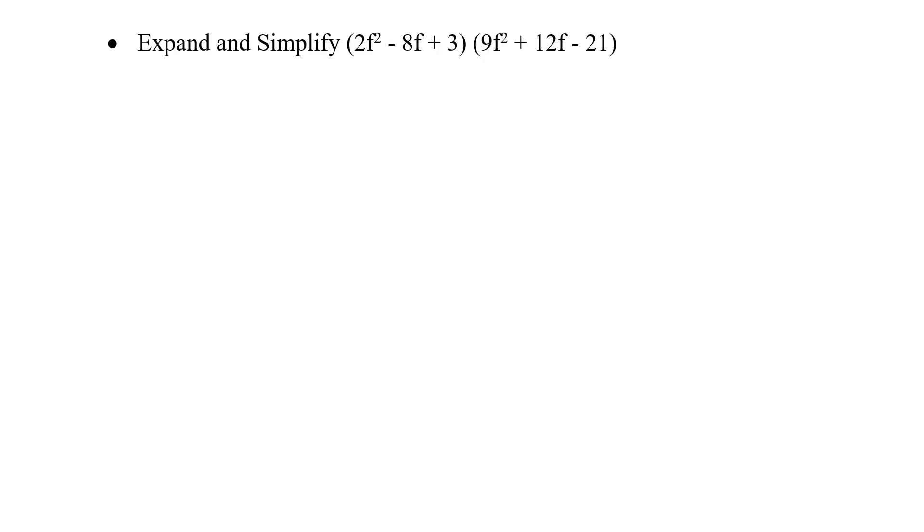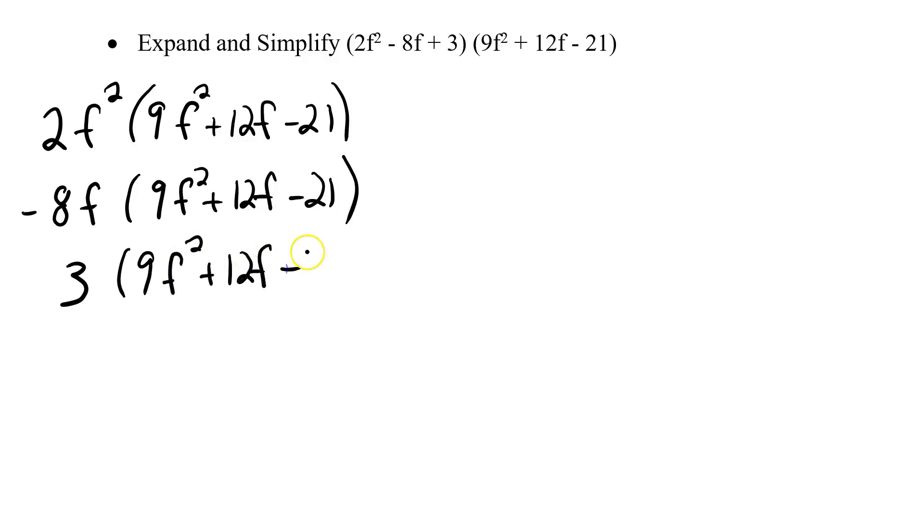Expand 2f squared minus 8f plus 3 times 9f squared plus 12f minus 21. Okay, a much more difficult question, but the same process applies. Take the first polynomial and write each term out. So I've got 2f squared minus 8f and 3 times that by the entire second polynomial. So I've got 9f squared plus 12f minus 21, 9f squared plus 12f minus 21, and 9f squared plus 12f minus 21.